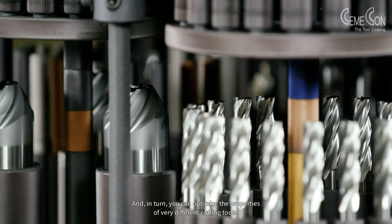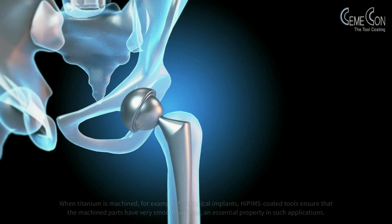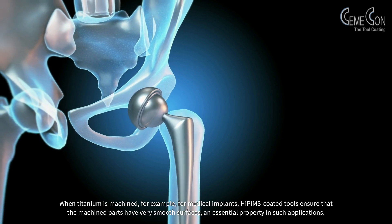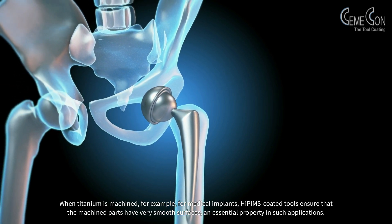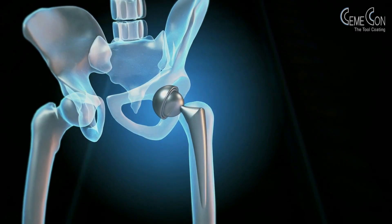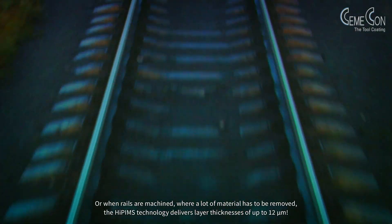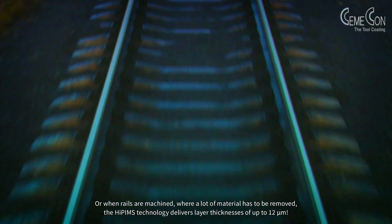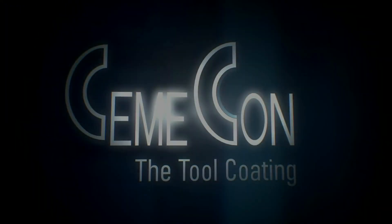And in turn, you can optimize the properties of very different cutting tools. When titanium is machined, for example, for medical implants, HiPIMS coated tools ensure that the machined parts have very smooth surfaces, an essential property in such applications. Or when rails are machined, where a lot of material has to be removed, the HiPIMS technology delivers layer thicknesses of up to 12 microns.